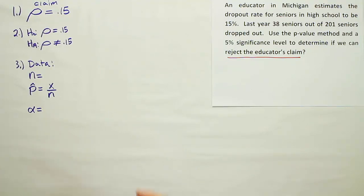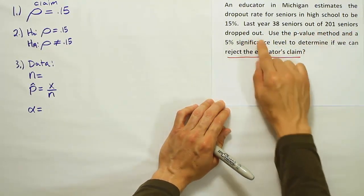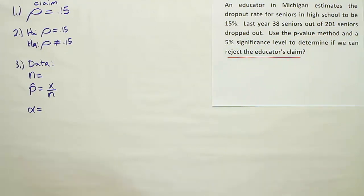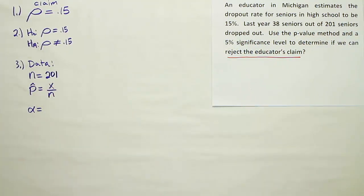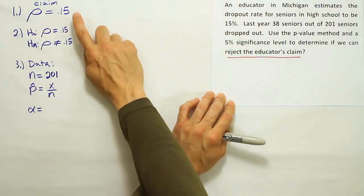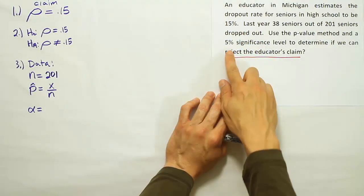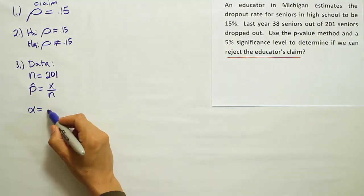Alright, let's read the problem now to see what N is. So it says, last year, 38 seniors out of 201 seniors dropped out. So I think that our N is 201 in this case. And then from there, we're going to see if they give us the P-hat directly. If they give it to us directly, it'll be listed as a percent. The only percents I see in the problem is this 15%, but that was the 15% that we used in our claim. And then we have this 5%, but that's our significance level. In fact, let's go ahead and pencil that in right now.